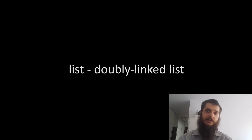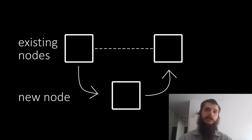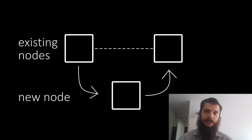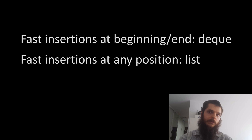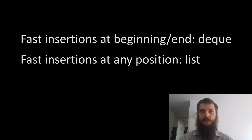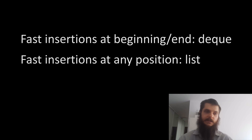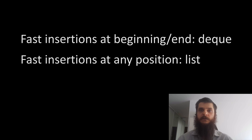A list is a doubly linked list which supports very fast insertion or deletion at any position because it just inserts or deletes a node. However, to insert or delete an element in the middle of the list, you first need to find the node before it, which requires iterating over all nodes in linear time. So: if you want fast insertions and deletions at the beginning or end, consider a deque. If you wish to insert or remove at arbitrary positions, use a list. There's also a forward list — essentially a singly linked list — which supports fast insertions or deletions at only one end.